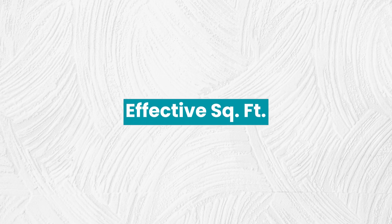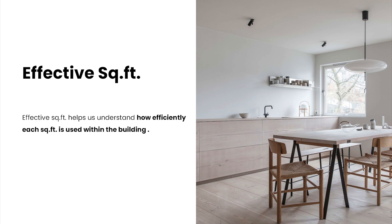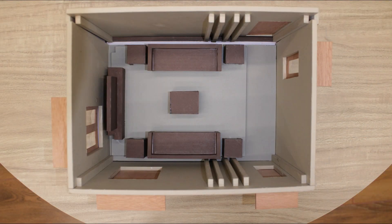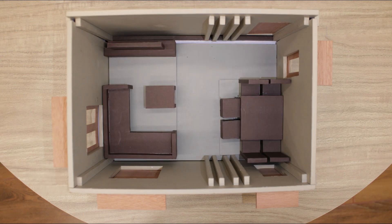Another important metric is effective square feet, which helps us understand how efficiently each square foot is used within the building. In this scenario, this space is used as a standalone living room and more area is taken up for circulation than for the living activity. This can be efficiently avoided by combining the circulation space of living and dining room, thus reducing the area for circulation and serving the required needs at the same time.